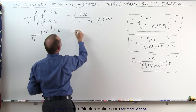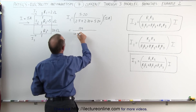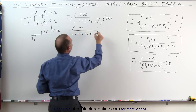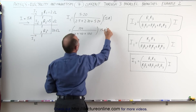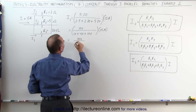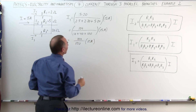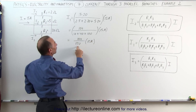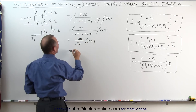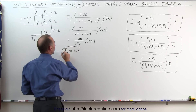Simplifying this, in the numerator we get 100, divided by 10 plus 40 plus 100, all multiplied times 15 amps. And so this simplifies to 100 divided by 150 times 15 amps. Of course, 15 divided by 150 is one-tenth, multiplied times 100. That means this is 10 amps of current in branch 1.